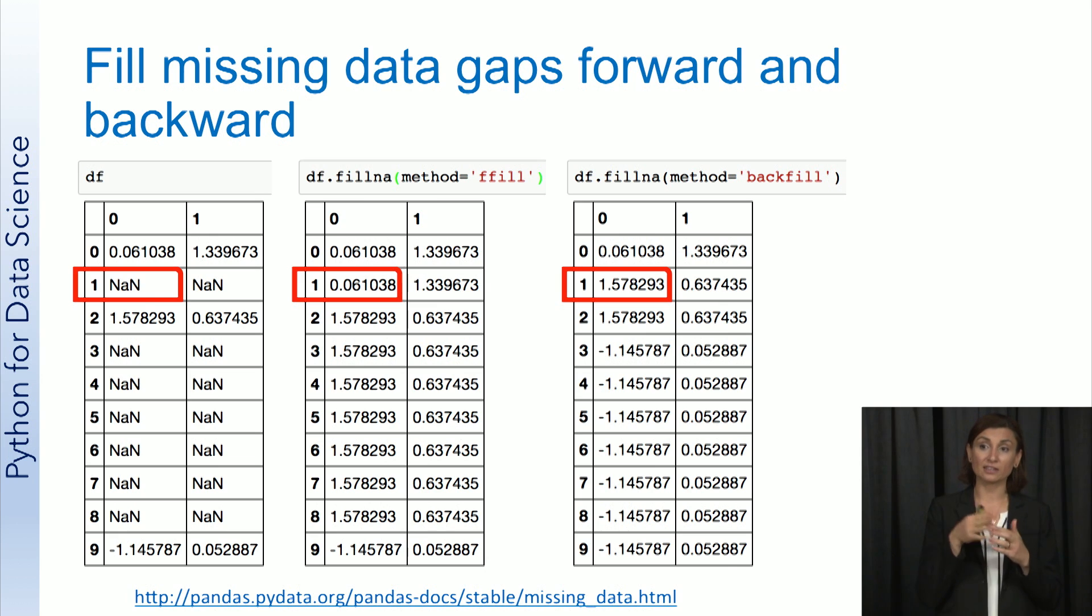So if you look at the second data frame, row 1, column 0 will no longer be NaN. It's going to be the value stored in row 0, column 0.